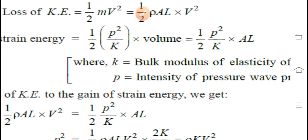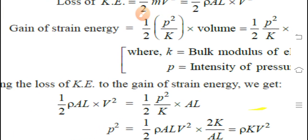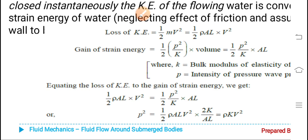Equating the loss of kinetic energy to the gain of strain energy, we get half rho AL into v squared equals half p squared by k into AL.